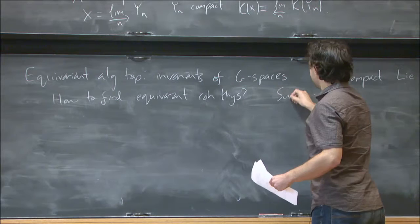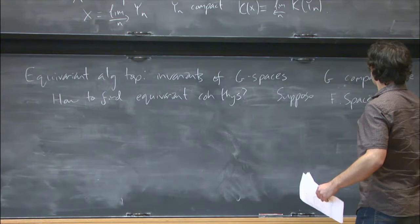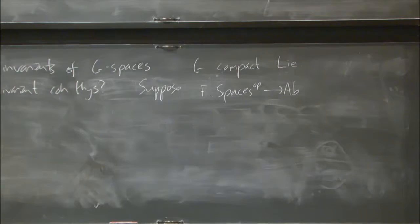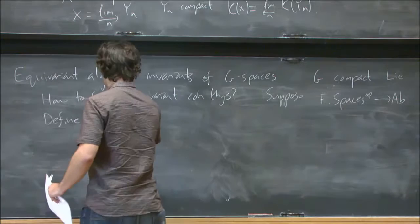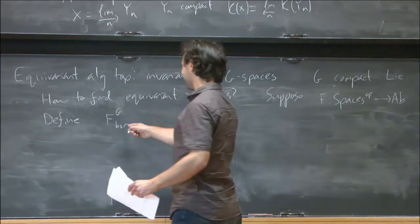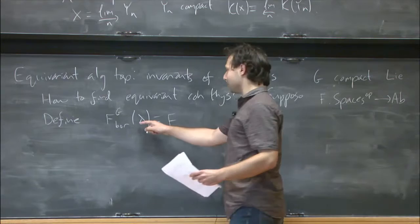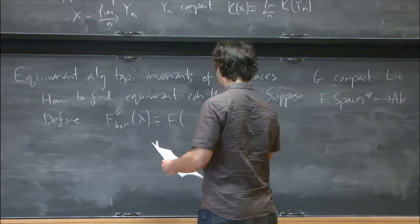Well, suppose I have just an ordinary cohomology theory that, again, I think of as a functor like this, which is homotopy invariant. Then I can define an equivariant version of F in a kind of stupid way. So I'll define what I'll call F G-Borel, a functor on the category of G-spaces, with equivariant F-theory of X to be,